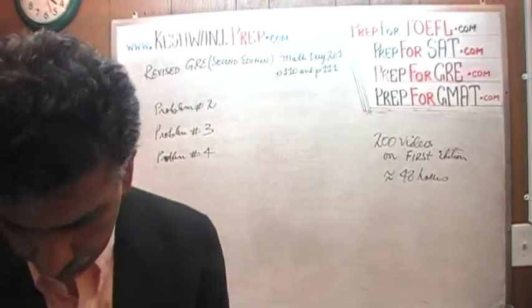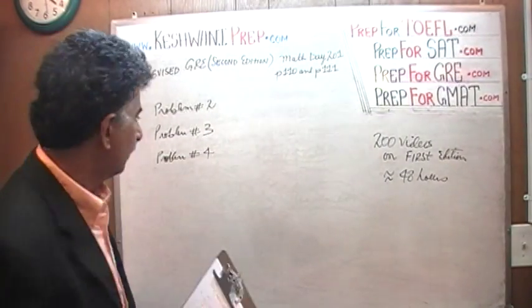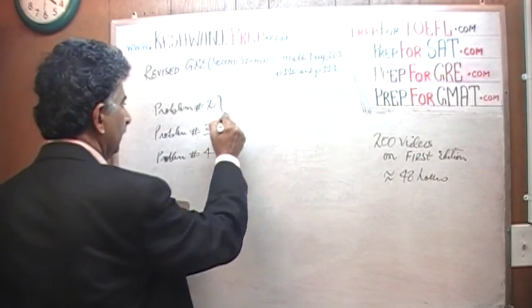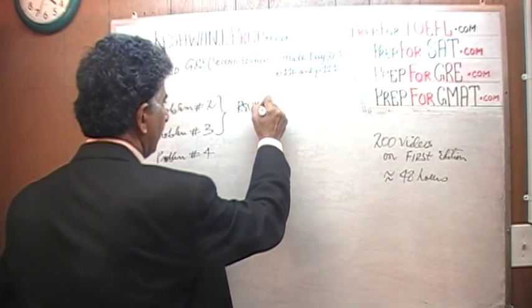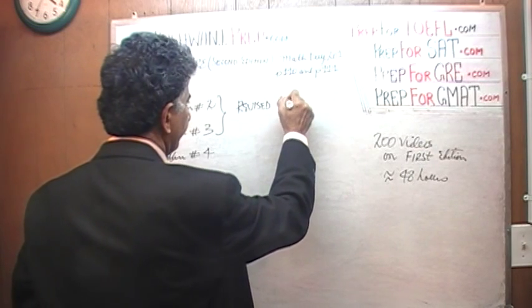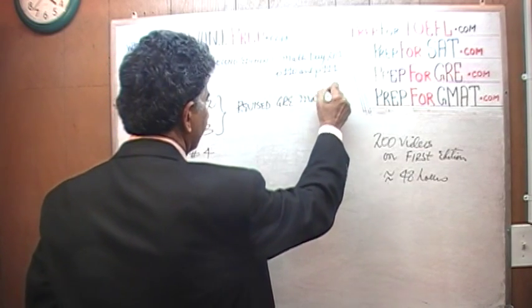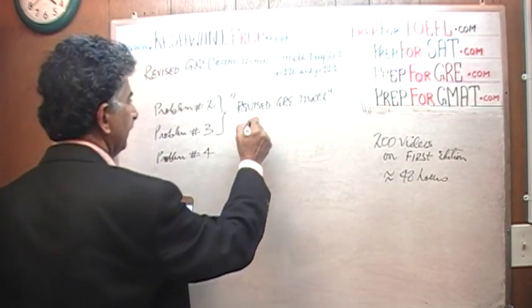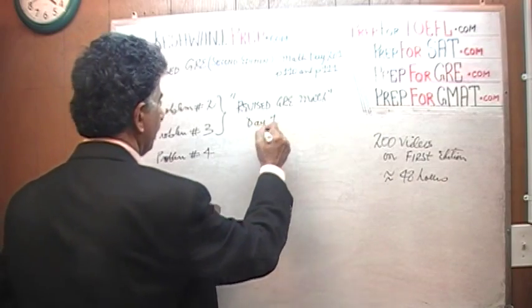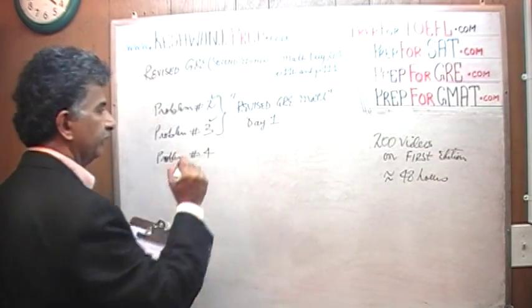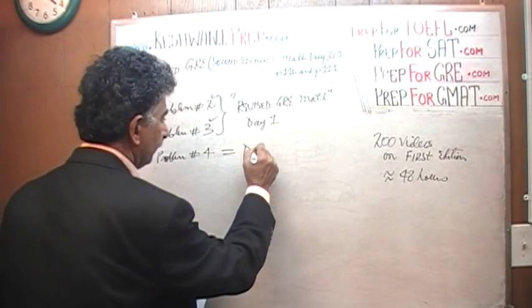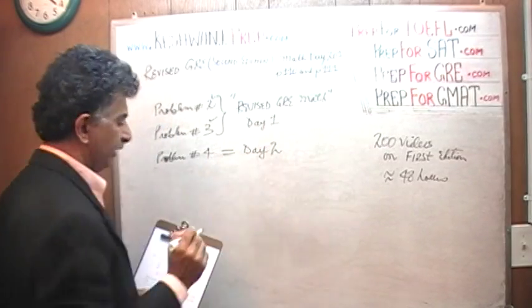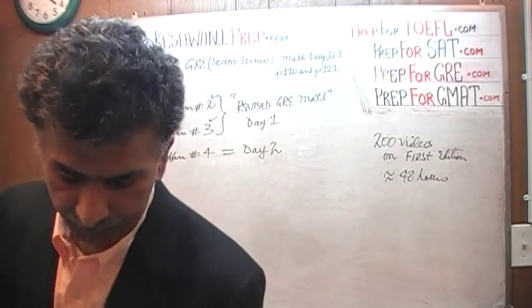For example, if you are interested in watching the solution to problems 2 and 3, just search for the tag 'Revised GRE Math' and type in 'Day 1,' and you will see the solution to problems 2 and 3. Problem number 4 was Day 2 — again, just type in 'Revised GRE Math Day 2' and you will find it.